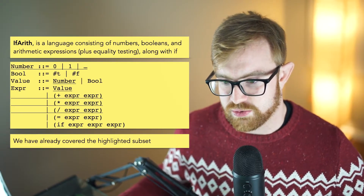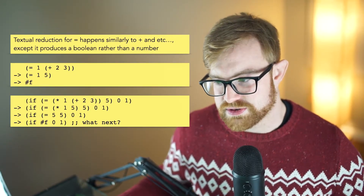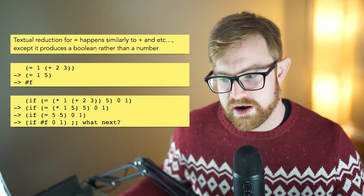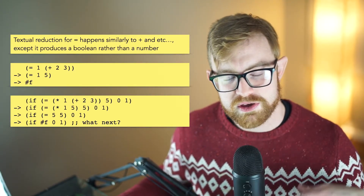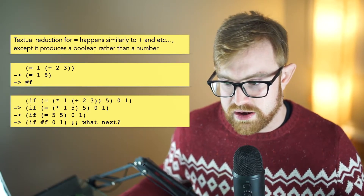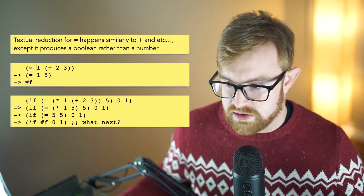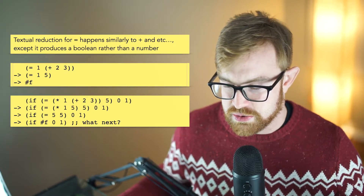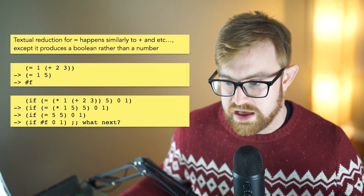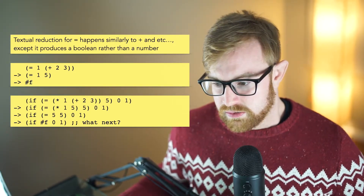So let's look at how the rules for those work. Textual reduction for equals happens very similarly to plus. First, you reduce all the arguments. And then if the arguments are equal, you return true; otherwise you return false. So for example, we've got equals 1 plus 2, 3. That's going to step to equals 1, 5. And then these are not equal, so that's going to step to hash-F.